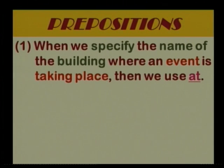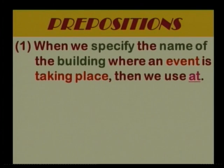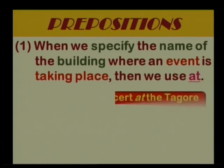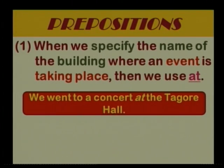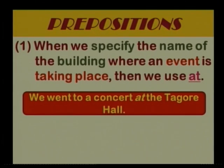When we specify the name of the building where an event is taking place, then we use AT. This is a very important point. When we specify the name of the building where an event is taking place — for example, it would be wrong to say 'we went to a concert in the Tego Hall.' When the name of the building is specified, we have to use the preposition AT.